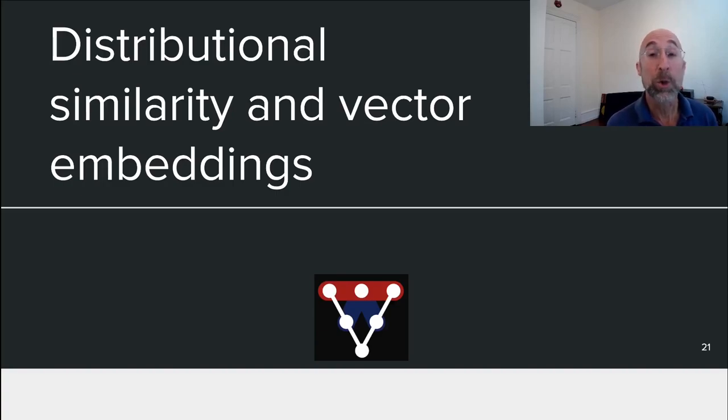One of the key tricks to getting natural language processing to work well is to use good vector embeddings. So I want to go into a little more detail of distributional similarity and vector embeddings than we did last week.